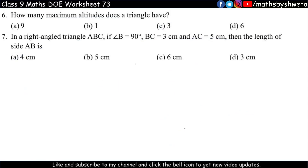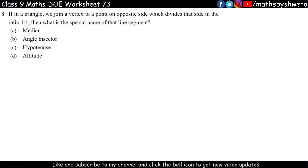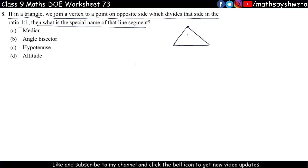Question number 8: If in a triangle, we join a vertex to the point on the opposite side which divides that side in the ratio 1:1, what is the special name of that line? We know that when it is a median, it divides the side into equal parts. A ratio of 1:1 means equal parts. So the answer is median — just the language is changed.